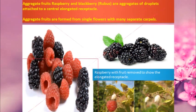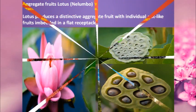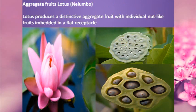Raspberry and blackberry are aggregates of drupelets, which are attached to a central elongated receptacle. So aggregate fruits are formed from a single flower with many separate carpels. Lotus produces a distinctive aggregate fruit with individual nut-like fruits embedded in a flat receptacle — this is the aggregate fruit lotus example.